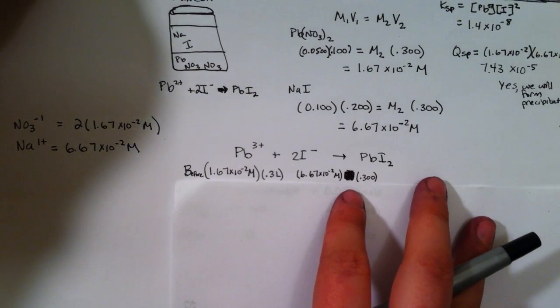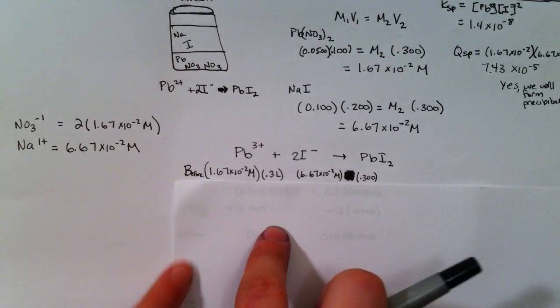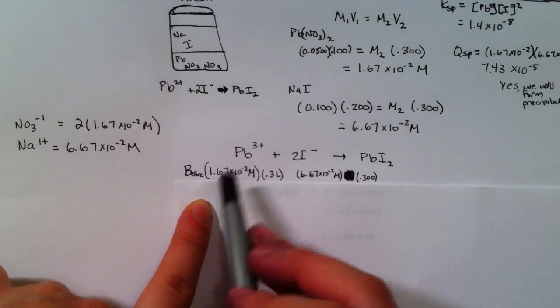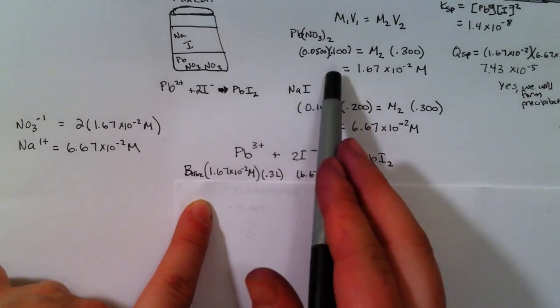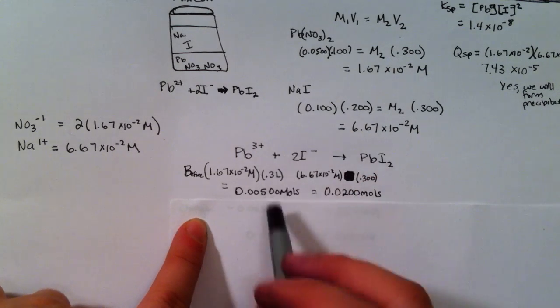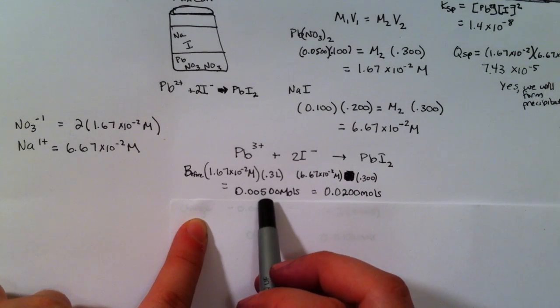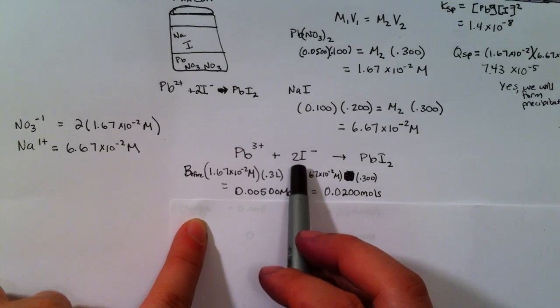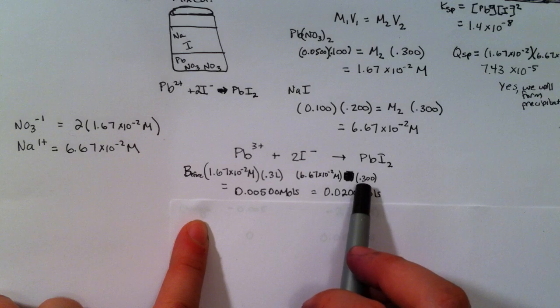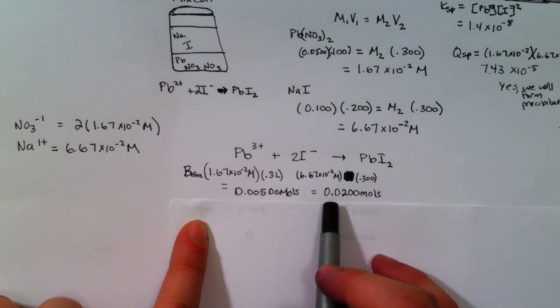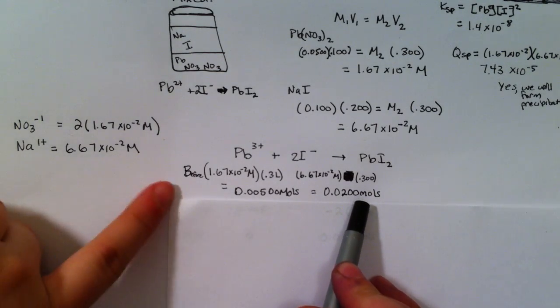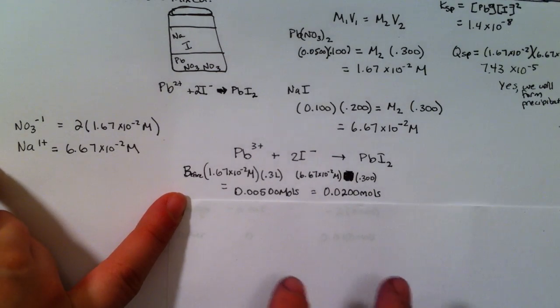So before the reaction, I have this molarity of lead from up here and I have 0.3 liters, so that means I'm going to have 0.005 moles. And I have that molarity of iodine from up here, times 0.3 liters, so I have 0.02 moles. That's my before the reaction happens.